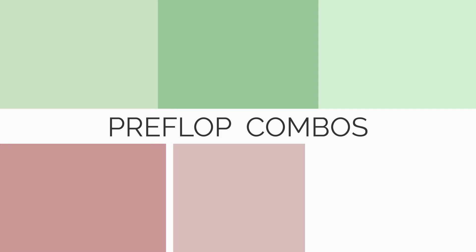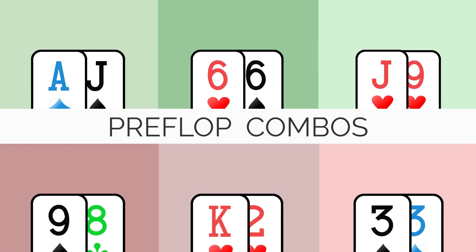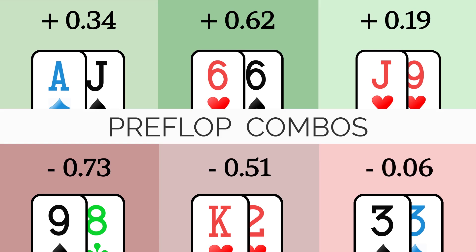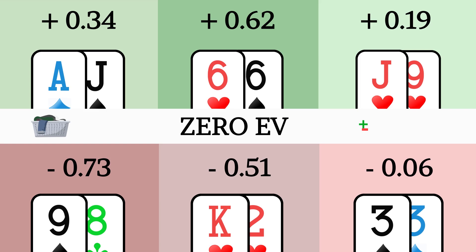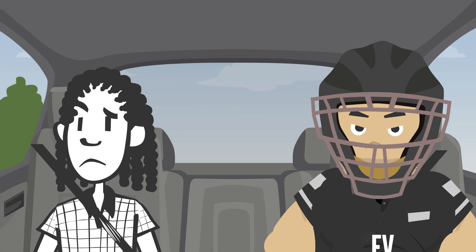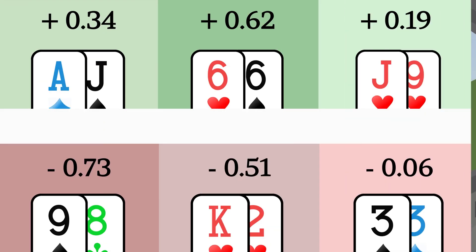Preflop, for example, is often full of hands which possess EV extremely close to zero one way or the other. Since folding is always zero EV, meaning we can't win or lose money by folding, we are faced with marginal raises or calls on early streets.